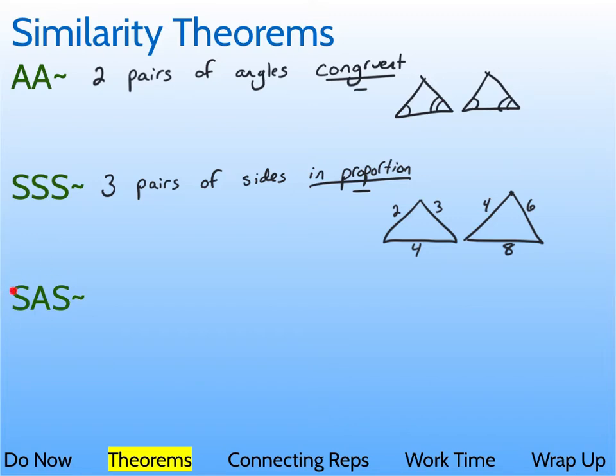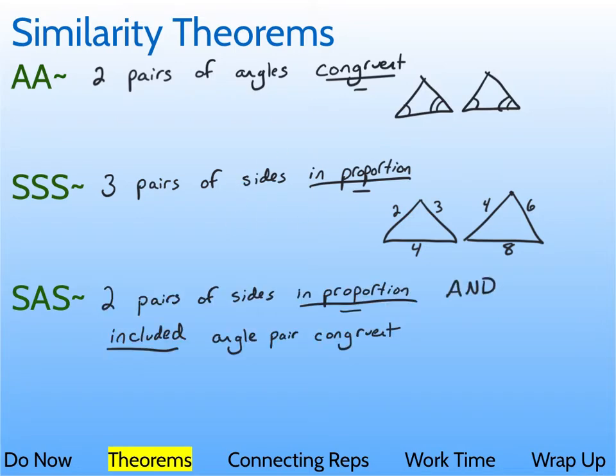Alright, side-angle-side. What we're going to do is kind of combine these things with the congruent angles and the sides in proportion. So, with this one, you need two pairs of sides in proportion, and you need the included angle pair to be congruent. So, if we draw another similar-looking diagram to what we had before, what we can do is we can have three and five, and then six and ten. So, those are in proportion. They have a scale factor of two. And we make the angle in between those two sides. That's the included angle. Those are congruent to each other. That is enough to prove that those two triangles are similar.